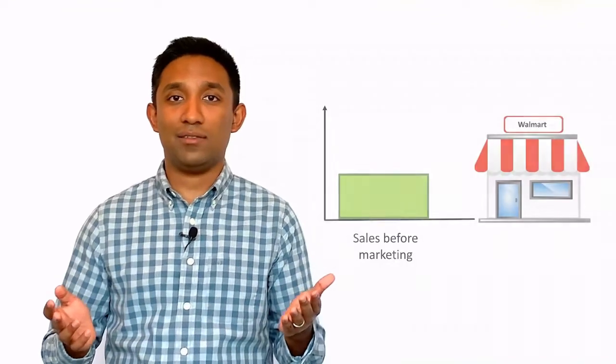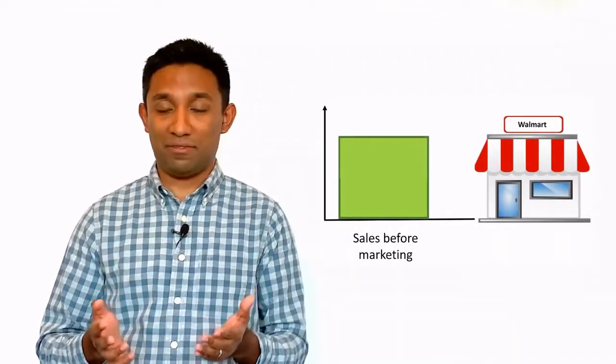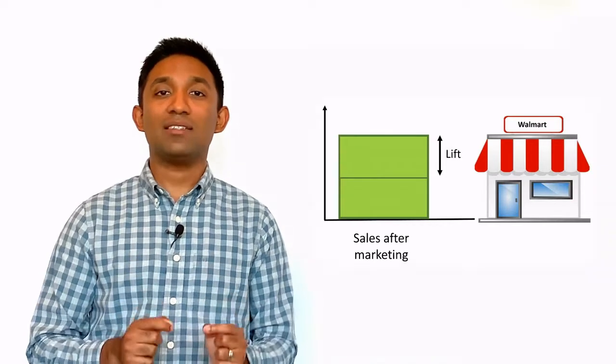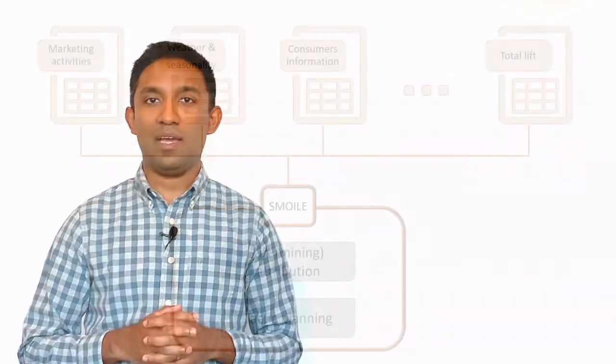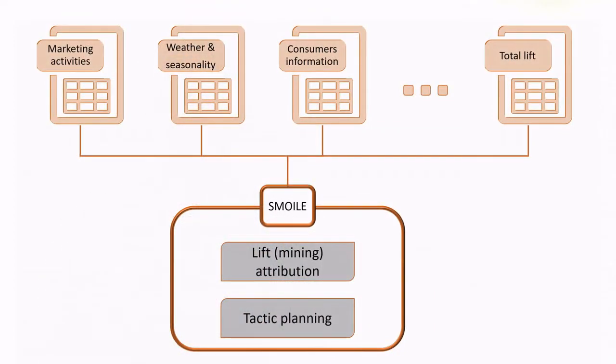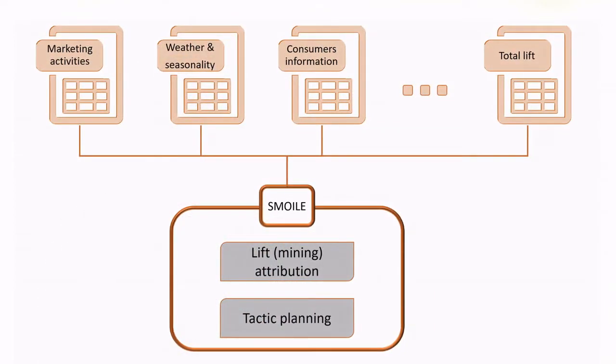Why do brands do this? They do this to increase sales. This is referred to as marketing lift. Planning or optimizing a marketing campaign to maximize lift is a challenging problem. And this is the focus of Shopping Marketing Optimization and Inverse Learning Engine, or SMOIL.